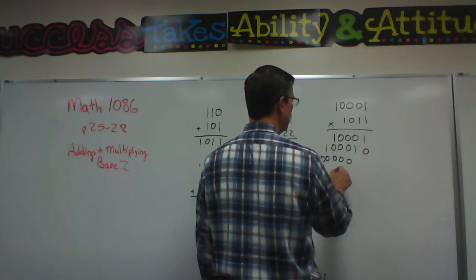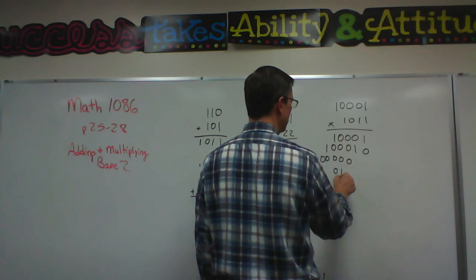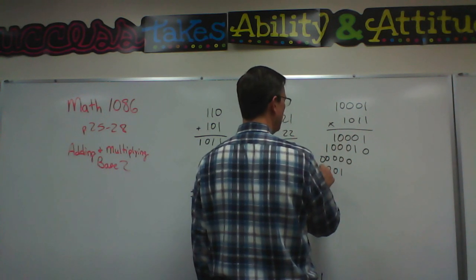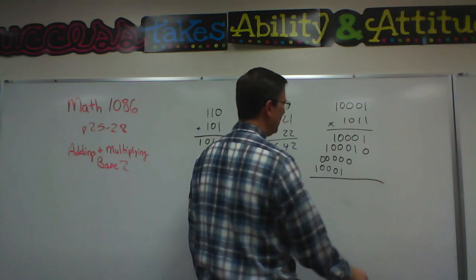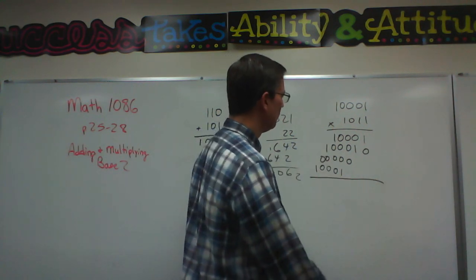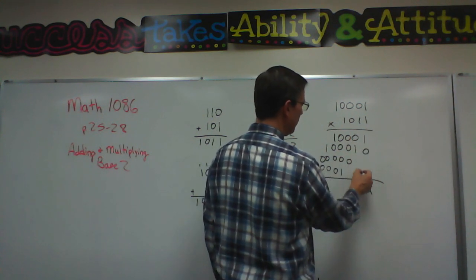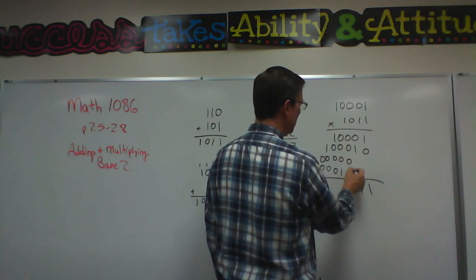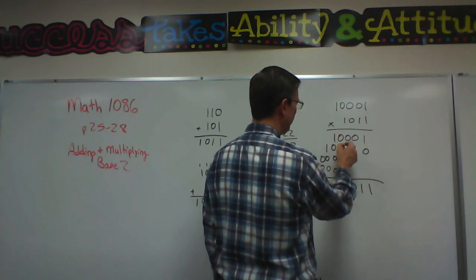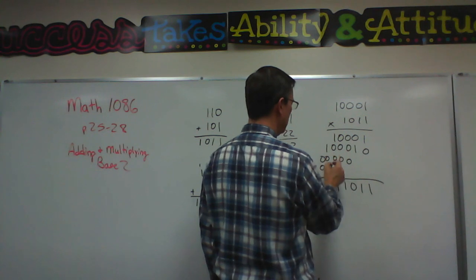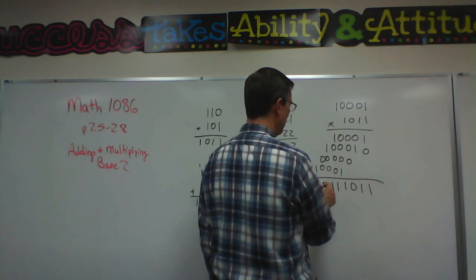And then I put a one. Kind of line these up: 1, 0, 0, 0, 1. Now hopefully I have these lined up and I don't get myself confused here. So I bring this straight down, it's a 1. Bring this down, and it's a 1. This is a 0, 1. Bring this straight down, it's a 1, a 1, a 0, and a 1. Wow, that's a big number.